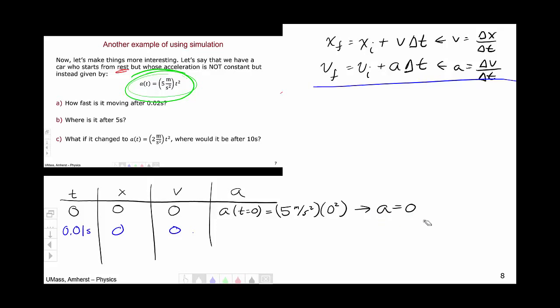Now let's try and figure out the acceleration at this particular instant. So the acceleration at t equals 0.01 is 5 meters per second squared times 0.01 squared. So that's going to give us an acceleration of 0.0005. Now we've got an acceleration, and we could move on to our next interval.